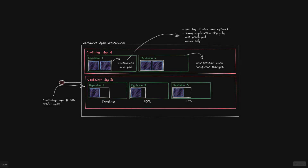Welcome to a new video in the series on Azure Container Apps. In this case we're going to take a look at revisions, which are used for lifecycle management — for example when you deploy new versions of your application you'll do that in a new revision. When you deploy your containers to an Azure Container App you'll have one or more containers that sit in a pod, similar to Kubernetes pods. Containers in the pod share disk and network, meaning they can communicate with each other over localhost. They share the same application lifecycle — when the pod dies the containers die as well. Your containers should not run privileged and today they should be Linux only.